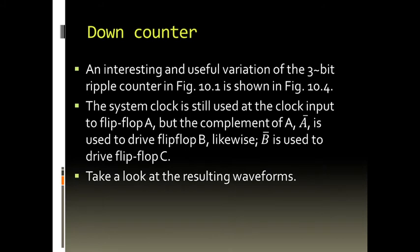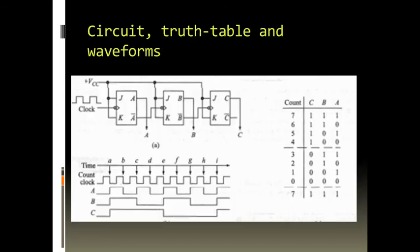Now we study another variation of the ripple counter — the down counter. In the down counter, every clock pulse decrements the content of the counter. In this variation, the system clock is still applied to flip-flop A, but the complement of A — that is, A-bar — is used to drive flip-flop B. Likewise, B-bar is used to drive flip-flop C.